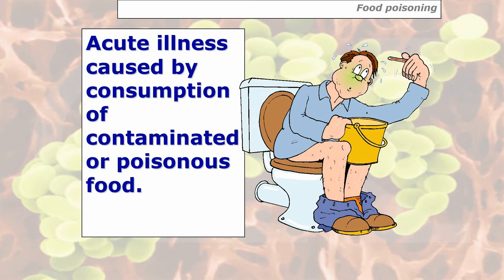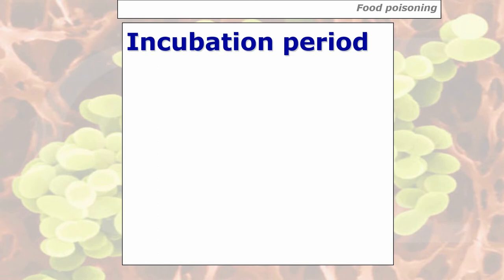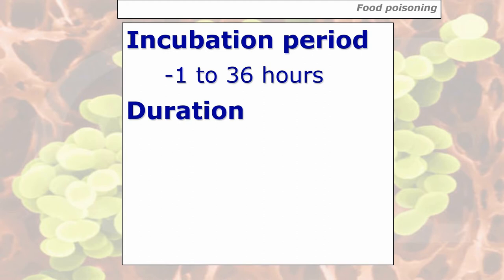So what is food poisoning? It's an acute illness caused by the consumption of contaminated or poisonous food. The main thing to remember is that it's an acute illness, which means it happens quickly — it could happen within one hour of ingesting poisonous food — as opposed to a chronic illness which could take a long time to develop. A key definition that could come up on the exam is what is an incubation period: it's the time taken from when you first ingest the food to when you start showing signs and symptoms of food poisoning, and that could be anything from 1 to 36 hours.